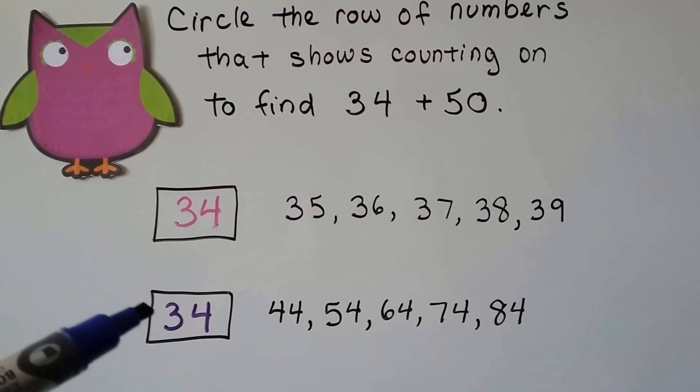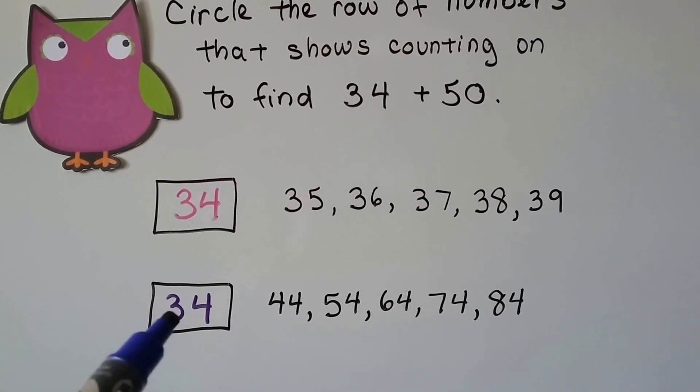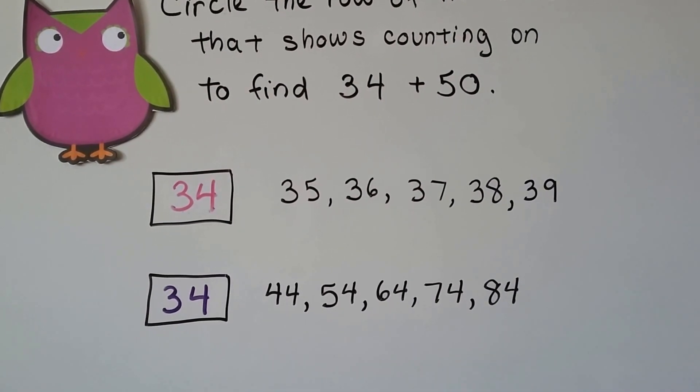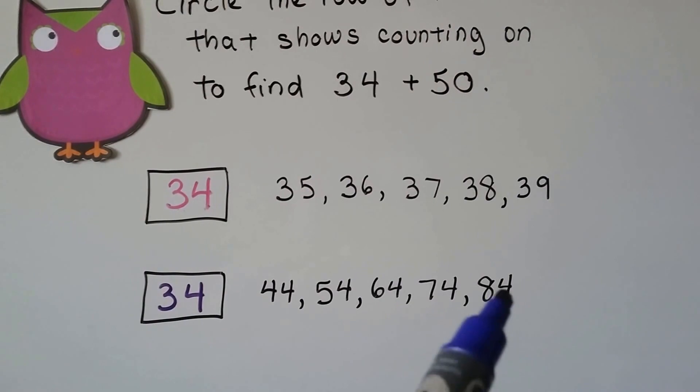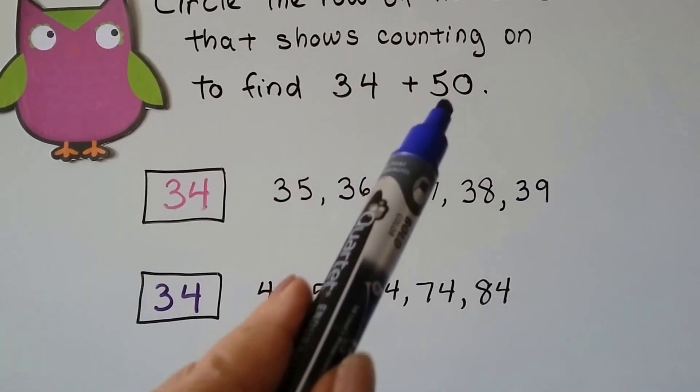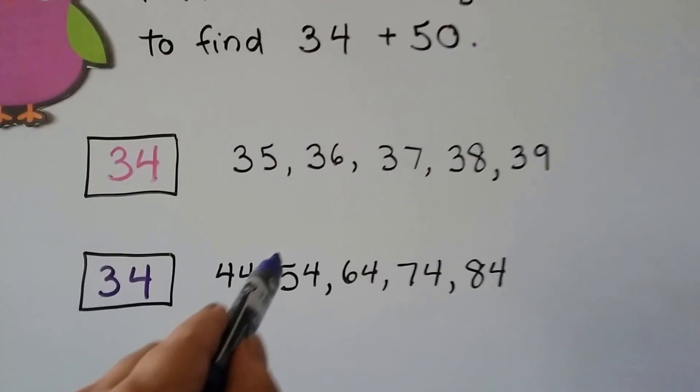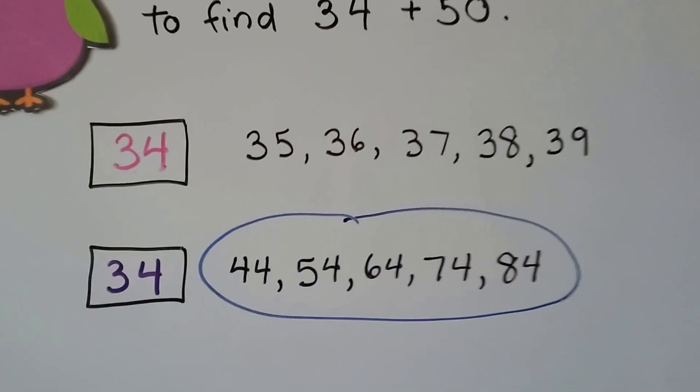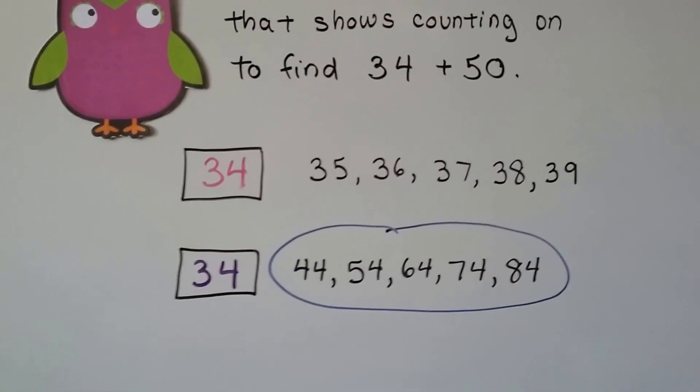If you said this one, you're right. This one's counting up by tens five times. 1, 2, 3, 4, 5 tens. And that's what we needed to add. So if you said this one, you're correct. That's the one that shows 34 plus 50.